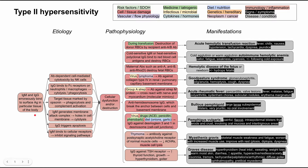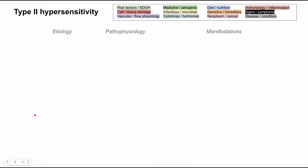Let's start briefly with the etiology at the very beginning. In type 2 hypersensitivity, you have IgM and/or IgG antibodies that are erroneously binding to surface antigens in particular tissues of the body. It's particular tissues of the body that are affected.